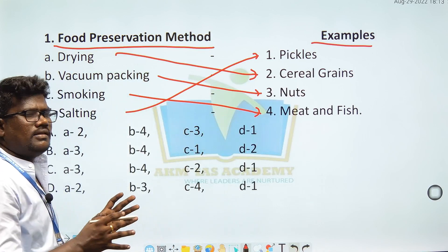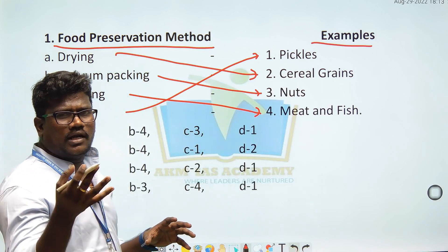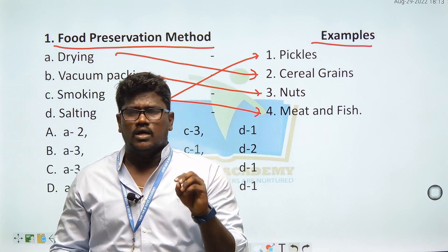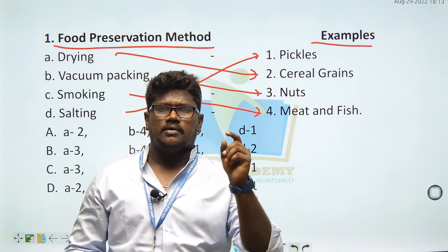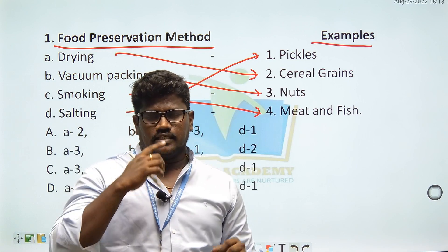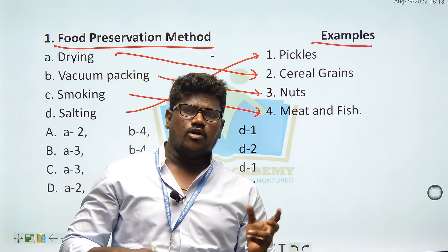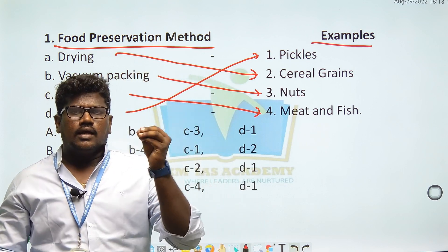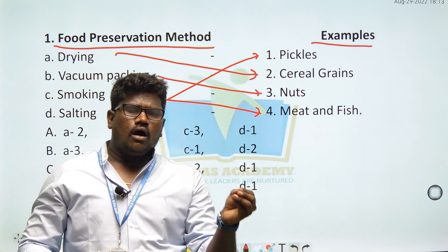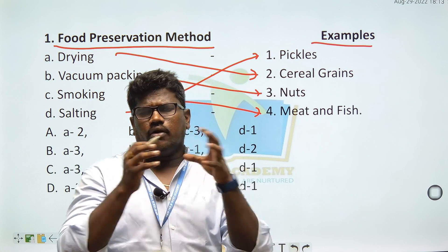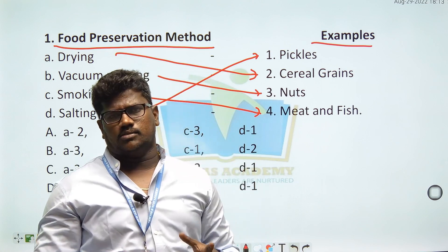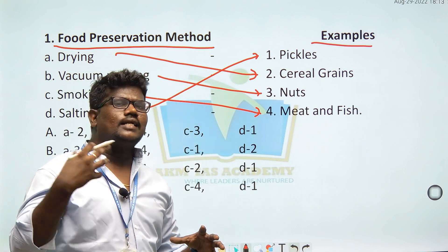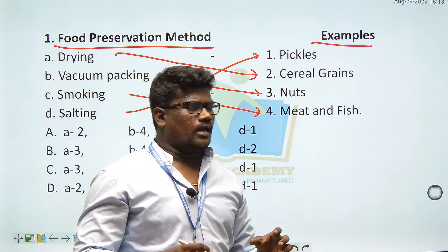Salt and sugar bind with the water molecules in the food where the microbes are, and they destroy the microorganisms. So we should choose the correct answer based on this understanding.